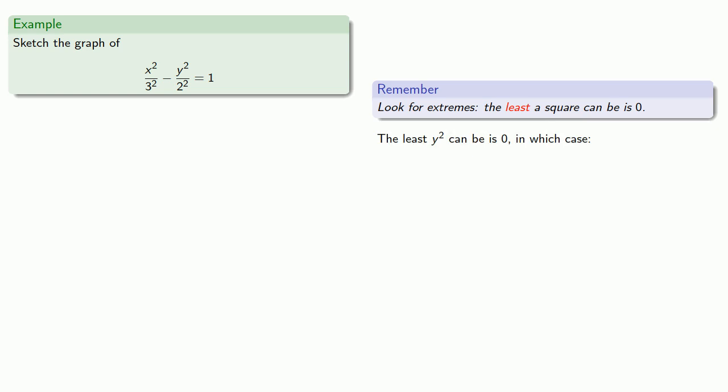On the other hand, the least y squared can be is 0. And so in that case, our equation becomes solvable. So we find the points 3, 0 and negative 3, 0 are on the curve.